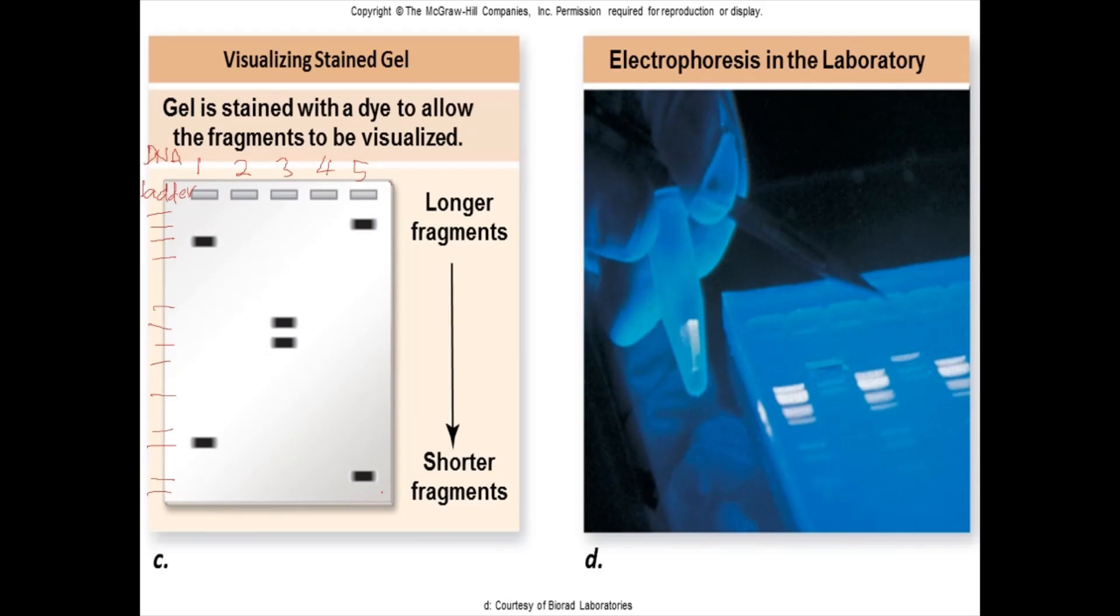Once the gel runtime is up, the gel is stained with a fluorescent dye to allow the fragments to be visualized. Lane one consists of samples from reaction one, lane three consists of samples from reaction two, and lane five consists of samples from reaction three.